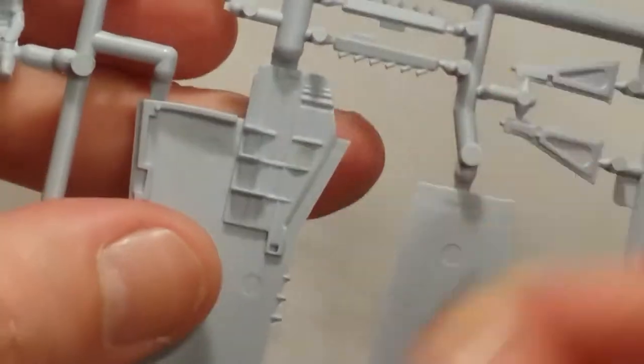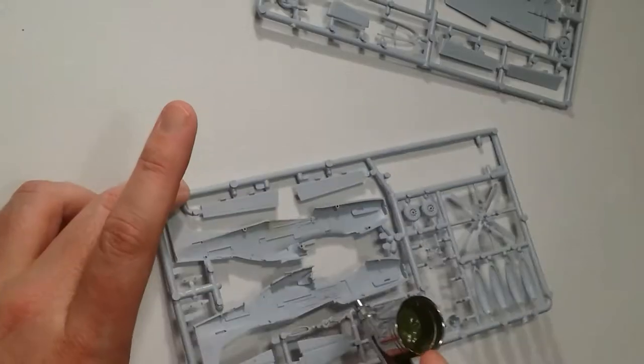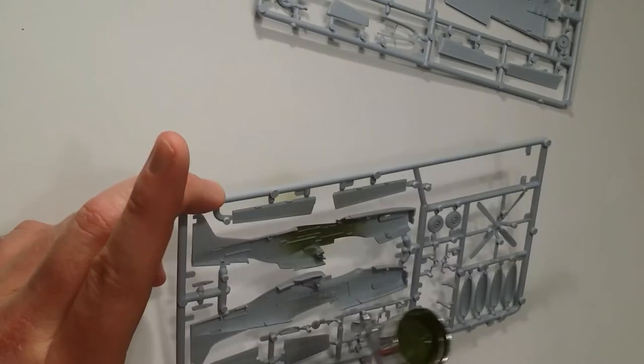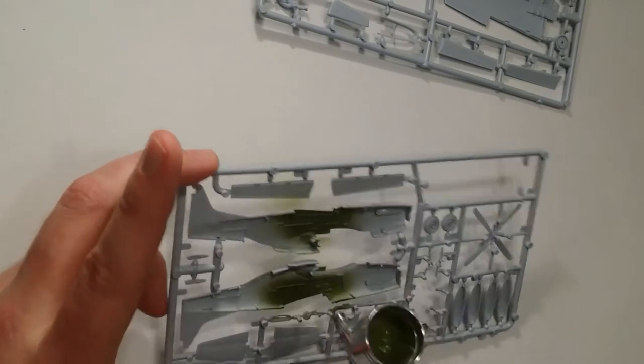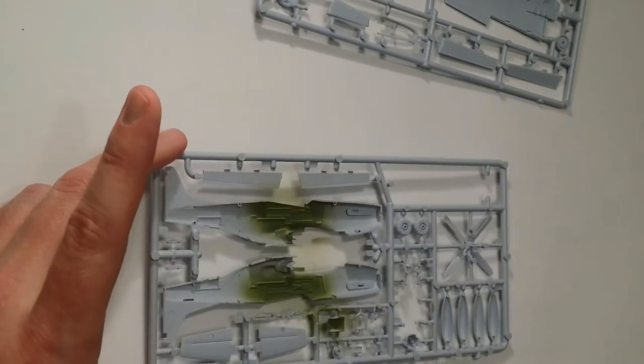So I'm building three Airfix P-51Ds. I'm building a Tuskegee one, I'm building a Blue Nose and I'm building one for the RAAF. So they've all got different schemes. Two of them are metallic but the third one for the RAAF isn't.